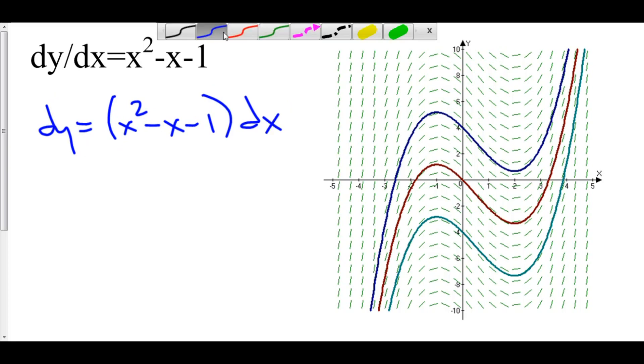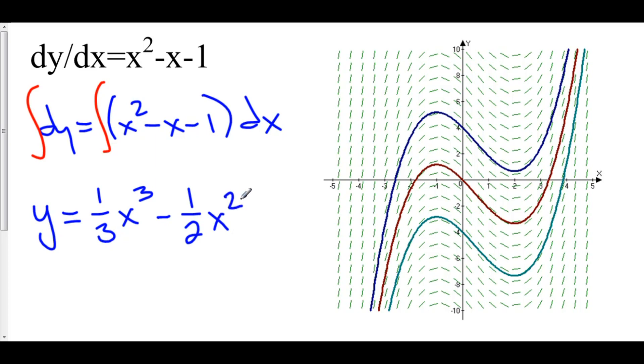Now, I could integrate both sides right now. The integral of 1dy is equal to y. The integral of x² is (1/3)x³. The integral of -x is -(1/2)x². The integral of -1 is -x. And we have to remember the +C because we do not have limits of integration. This is trying to find some antiderivative that fits this particular differential equation.